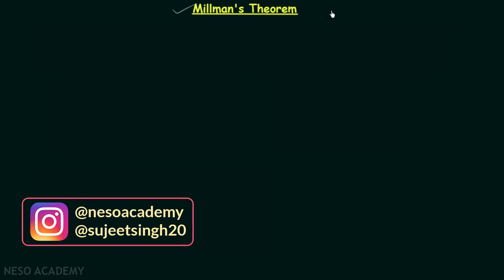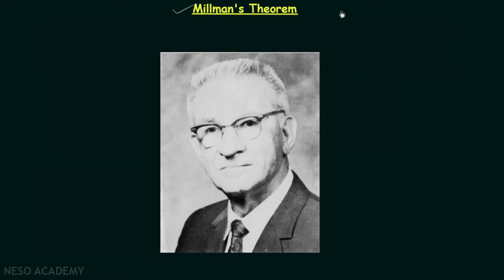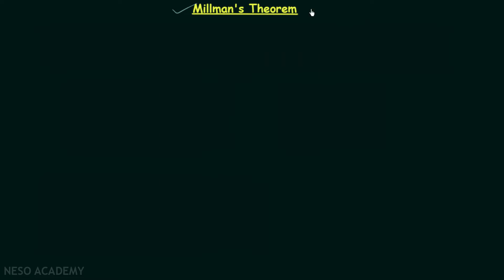We use this theorem to simplify the circuit when it has only branches in parallel. So when we have a circuit made up of branches in parallel, we use Millman's theorem to calculate the voltage at the ends of that circuit. This theorem was proved by Professor Jakob Millman and is named after him.